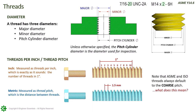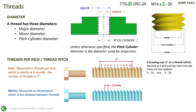ASME and ISO standards always default to the coarse pitch. For example, if a drawing says only a quarter inch on a thread callout, looking it up on a drill and tap chart shows two options: a quarter-inch-20 and a quarter-inch-28. The coarse thread is the lower number — quarter-inch-20 — because there are fewer threads per inch, and fewer threads per inch means the thread is more coarse.